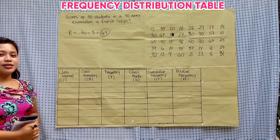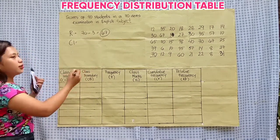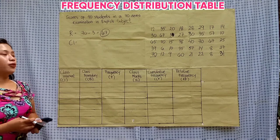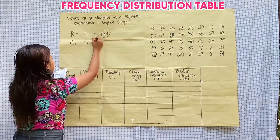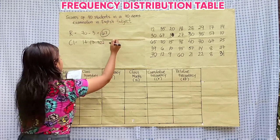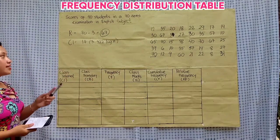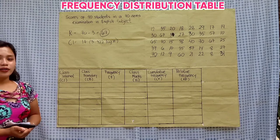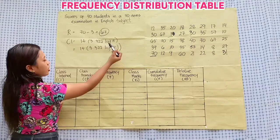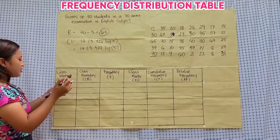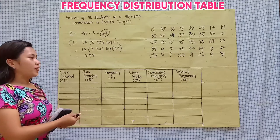Next, we need to find the class interval. We need to follow the formula, changing N to how many numbers are in our data. Our result is 6.32. We need to round this to the next whole number, which is 7. This is our class interval.